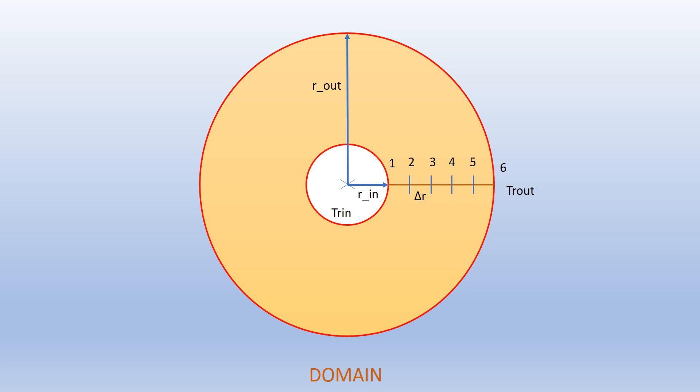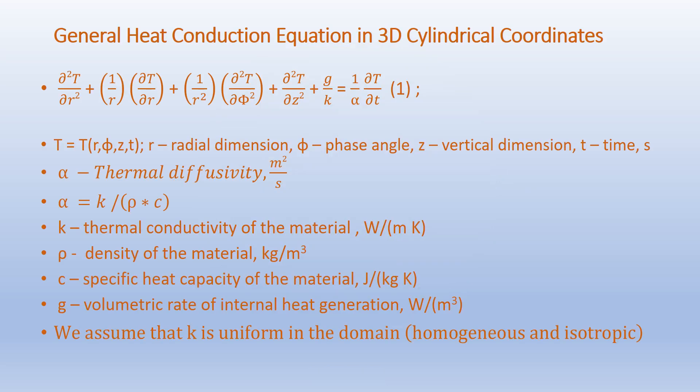The general heat conduction equation in 3D cylindrical coordinates is given below: d²T/dR² + (1/R)(dT/dR) + (1/R²)(d²T/dφ²) + d²T/dZ² + G/K = (1/α)(dT/dt).